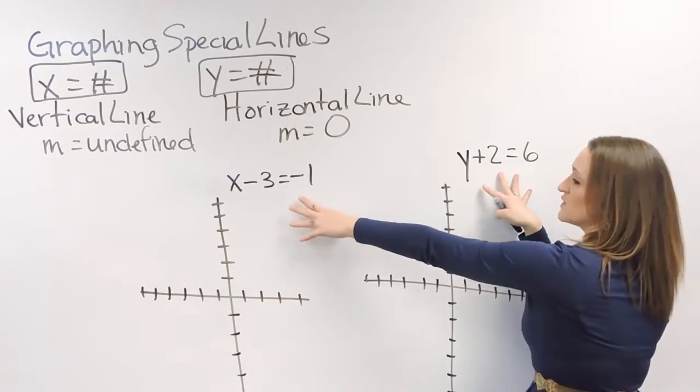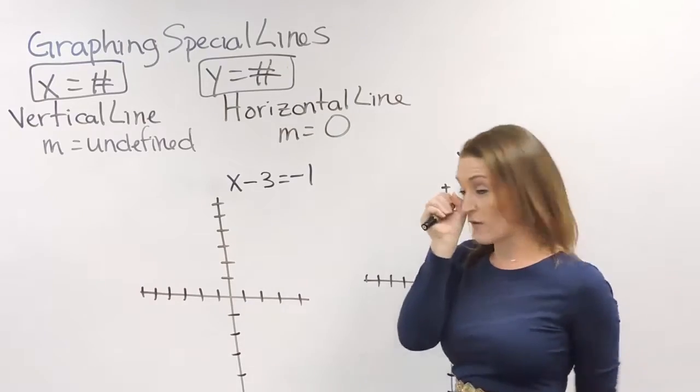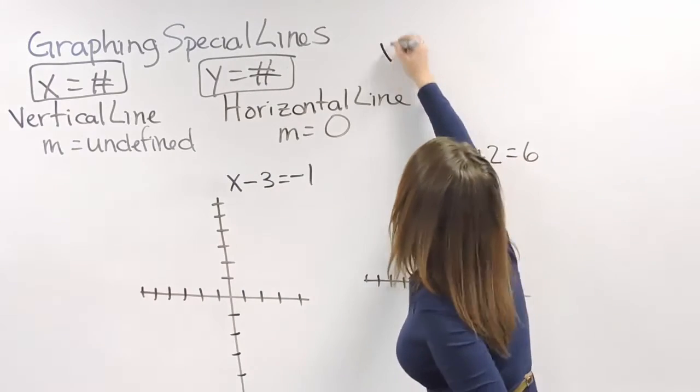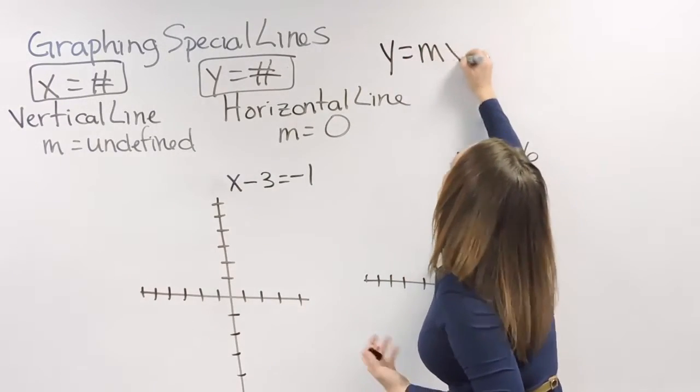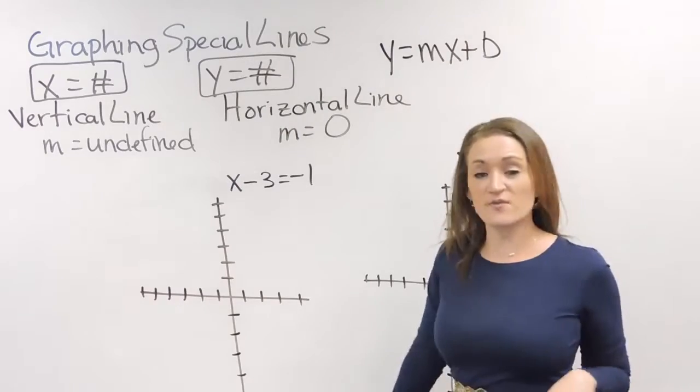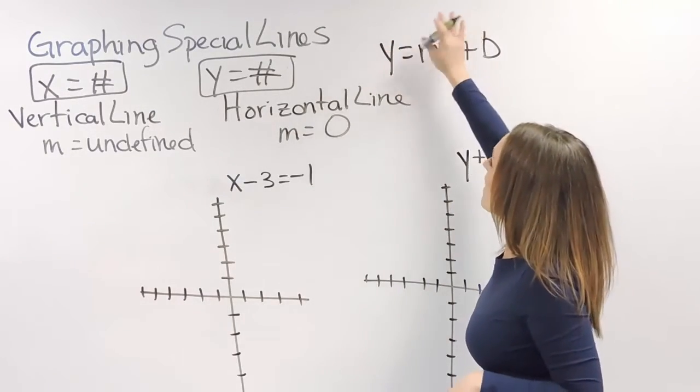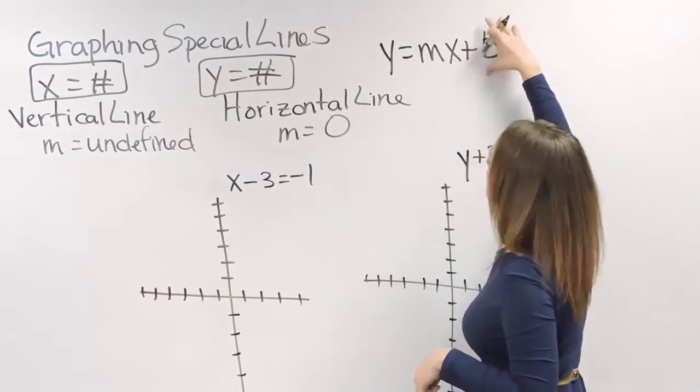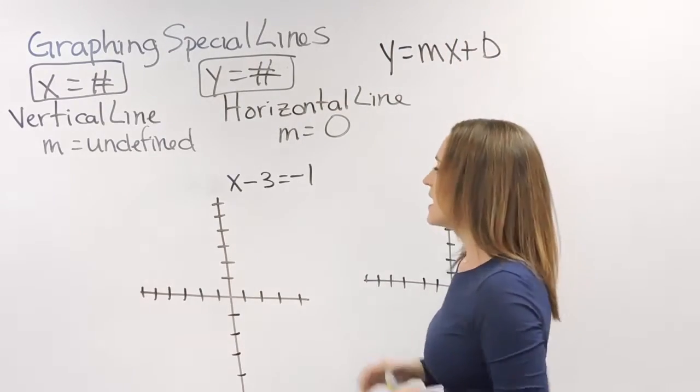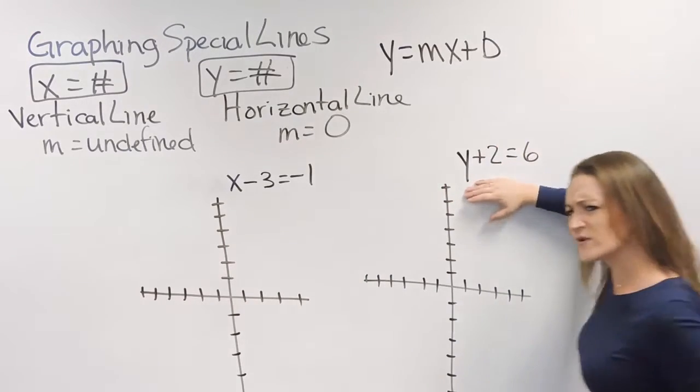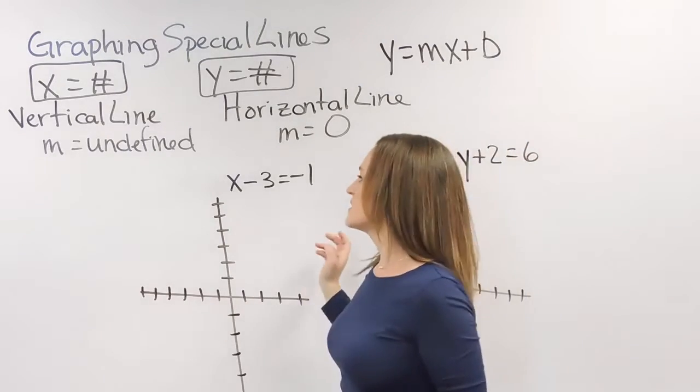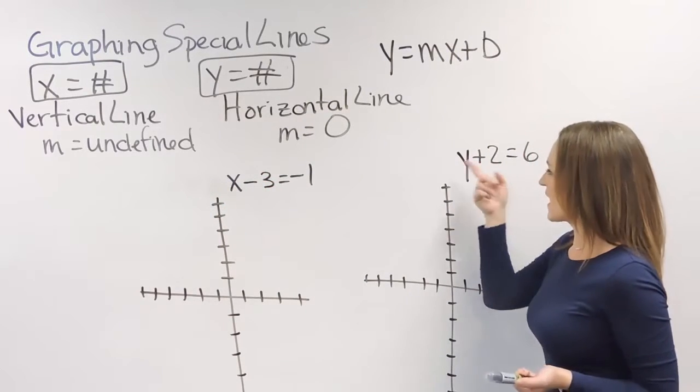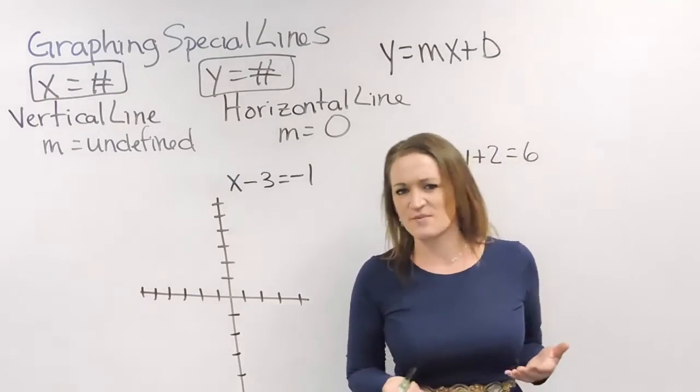So over here, I do have two different examples on the board that we're going to go over both of them. Notice these two equations here. Normally when it comes to a line, we're used to maybe seeing a line in slope-intercept form. You have a y, you have an x, and by this equation here, you can pick out your slope, you can pick out your y-intercept. But taking a look at these two lines that I have over here, they look quite different. This one doesn't have a y going on, I only have an x here. And then the opposite for this one, I have a y, I don't have an x, it's missing some information.